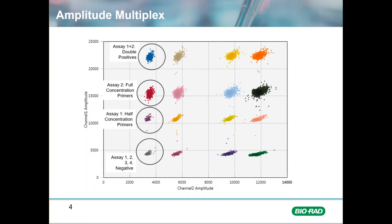Similarly on the bottom axis going from left to right is the hex channel or channel 2 positives, where the first cluster is positive for assay 3 at half primer concentration. The positive cluster for assay 4 is just beyond that at full concentration. And finally, the double positive cluster at the far right is positive for both assay 3 and assay 4.